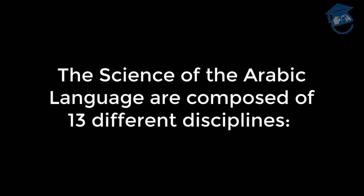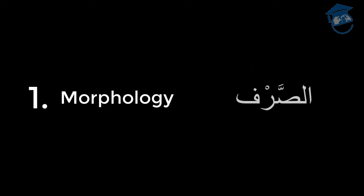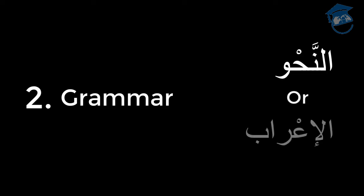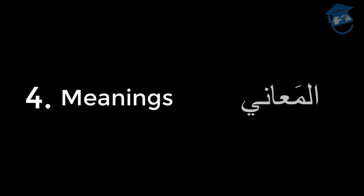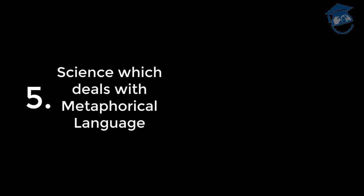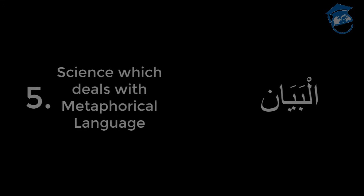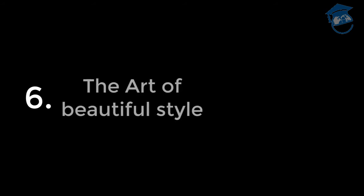The sciences of the Arabic language are composed of 13 different disciplines: 1. Morphology, a-sarf. 2. Grammar, a-nahu or al-i'rab. 3. Writing, a-rasam. 4. Meanings, al-ma'ani. 5. The science which deals with metaphorical language, al-bayyan. 6. The art of beautiful style, al-badiyah.